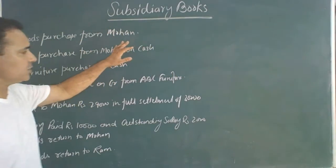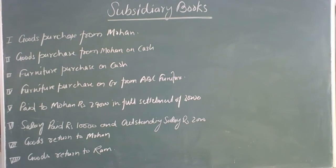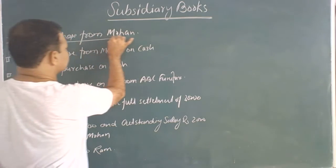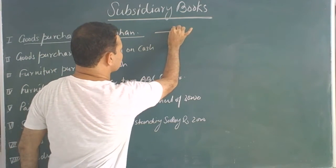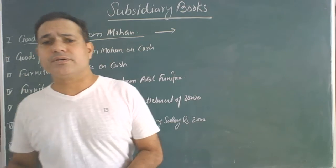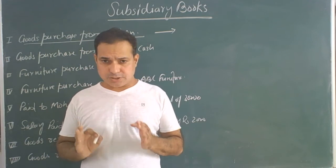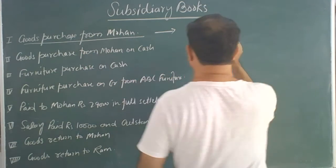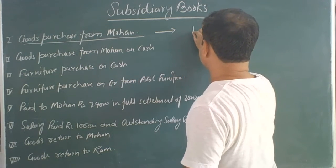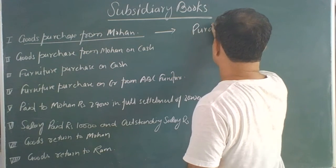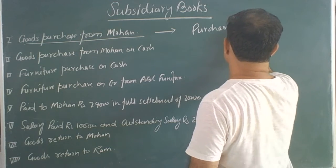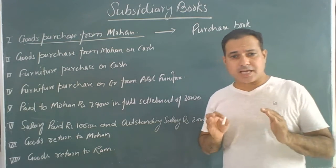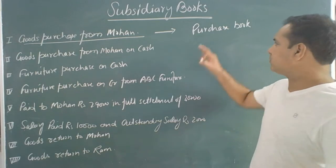The first transaction is goods purchased from a supplier on credit. Whenever we purchase goods on credit, it will go to the purchase book.